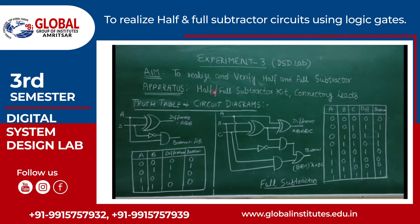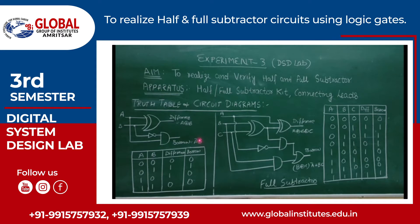The half subtractor is used to subtract two bits and generates two outputs. One is the difference and the second is the borrow. The expression for the difference is A XOR B, and the expression for borrow is A-bar AND B. This is implemented using an XOR gate, a NOT gate, and an AND gate.